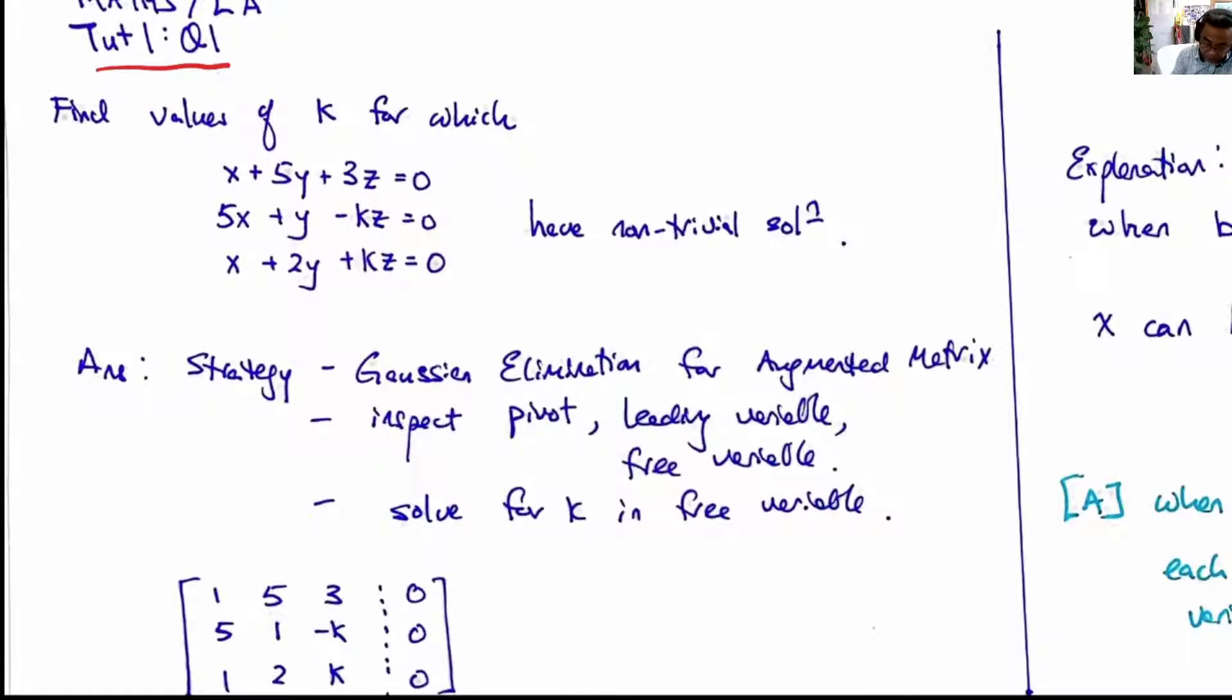The problem is this: we are given the following equations. We are asked to solve for k for non-trivial solution. By non-trivial solution it means that the solution x, y, z should not be equal to 0, 0, 0. Otherwise this is the trivial solution.